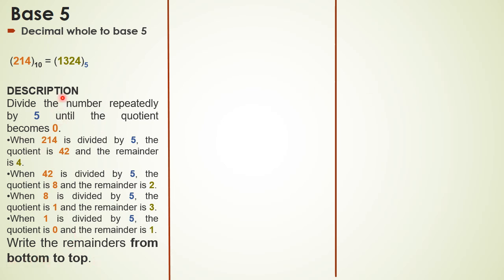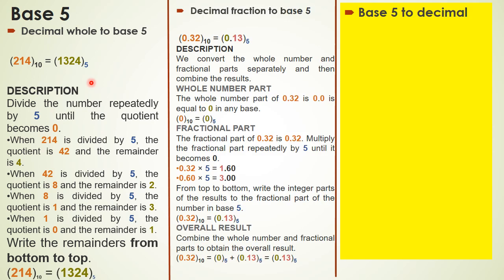If the decimal is a fraction, then I will keep multiplying it until I get 0, and then I can write it as like this: 0.13, you can see the whole number.